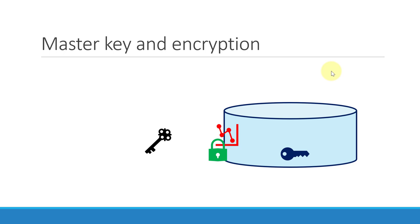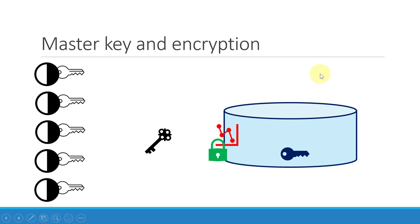It is always not recommended to store the key in a single location or with a single person. That's where Shamir's Secret Sharing algorithm comes into picture, where this particular master key will be divided into n number of keys and each key will be provided to an individual person or stored in different systems. I can set a threshold for how many keys are required to decrypt the data, and it is not necessary to provide all the split keys.